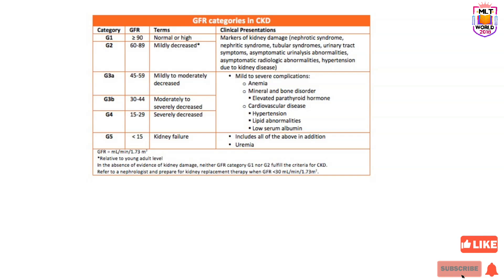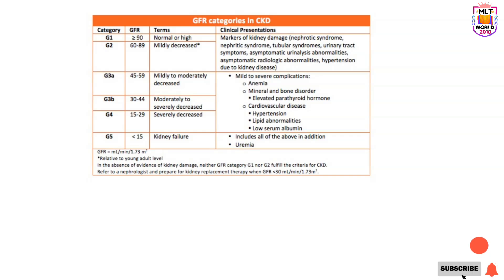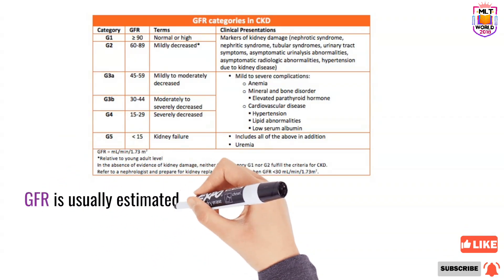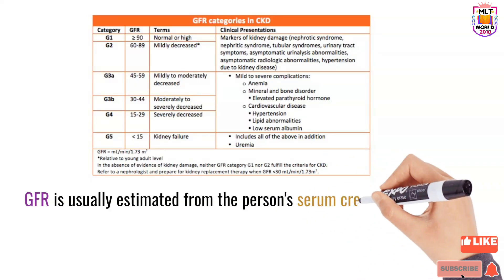Looking at this diagram: G1 means if GFR is more than 90, it is normal, category grade 1. Grade 2 in CKD is 60 to 89 — mildly decreased. Grade 3 is divided into 3A (GFR 45 to 59) and 3B (GFR 30 to 44). Grade 4 is 15 to 29, and grade 5 is less than 15, representing kidney failure.